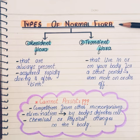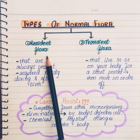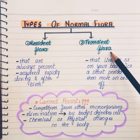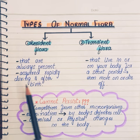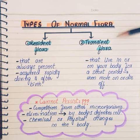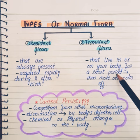Now let's move to the types of normal flora. There are two types: first, resident flora, and second, transient flora. Resident flora are always present in our body and are acquired rapidly during and after birth.